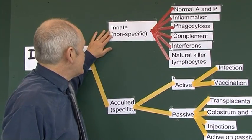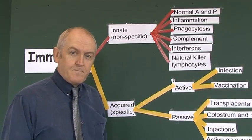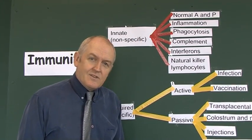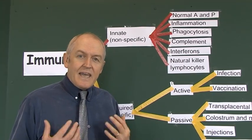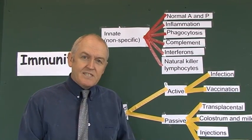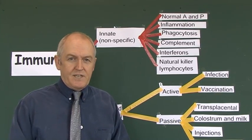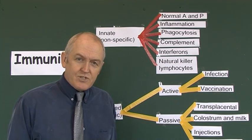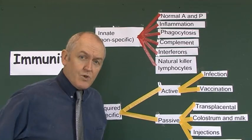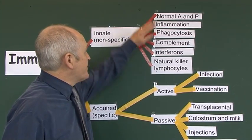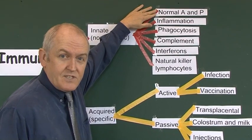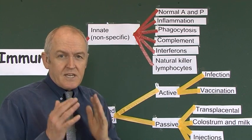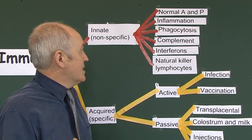How is this innate, non-specific immunity achieved? The first component is normal anatomy and physiology — inborn mechanisms. For example, if the skin is intact, that's going to keep a lot of organisms out. If the mucous membranes are intact, that's going to keep most organisms out as well. These are physical barriers and chemical barriers that keep bacteria out.